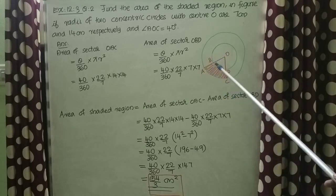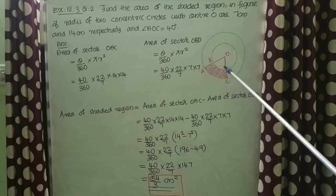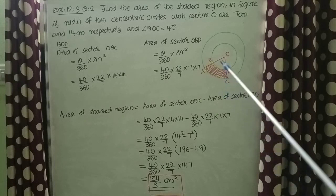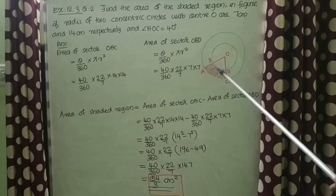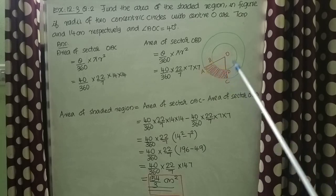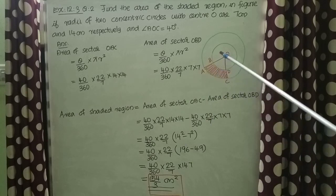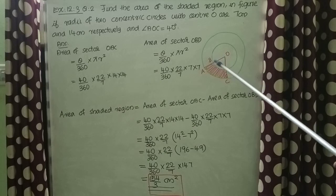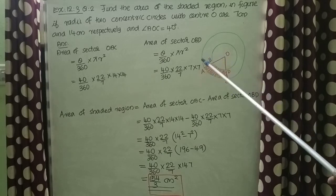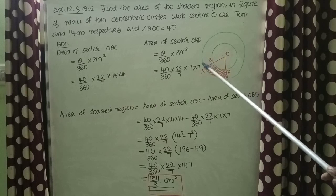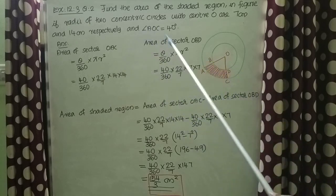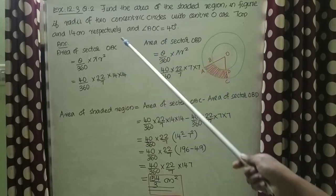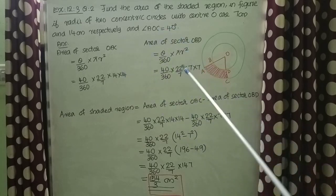We need to find out the area of the shaded region. We can understand from the figure that this shaded region can be found by subtracting the area of the smaller sector OBD from the bigger sector OAC. So let us find out the area of sector OAC and OBD first, then we can subtract.